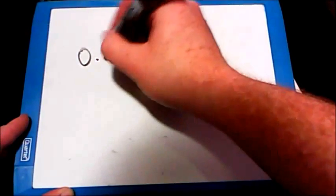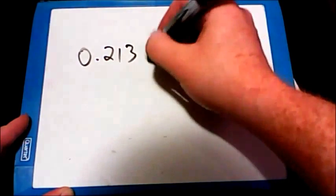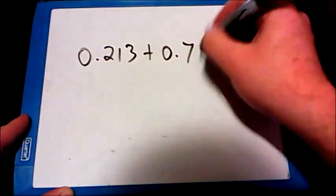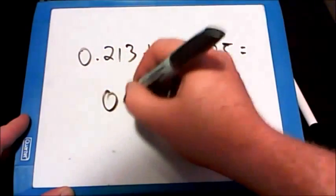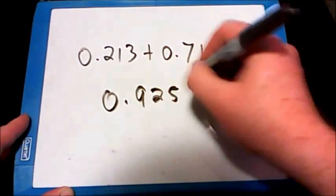To finish this problem up, we just have to take those two weighted scores, 0.213, and add it to the 0.7125 to get a total of 0.9255.